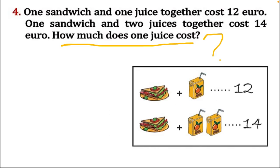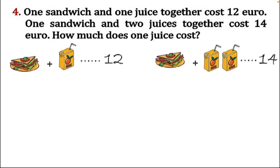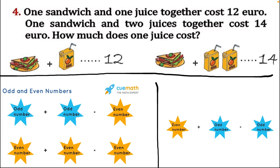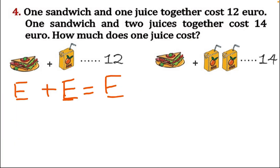Method two: we need to find how much one juice packet costs. I have placed both equations side by side and will solve this with a different method. We already know the rules for odd and even numbers. When two odd numbers are added we get an even number — for example, three plus three equals six. When two even numbers are added we get an even number — two plus two is four. When an even and an odd number are added we get an odd number — one plus two is three.